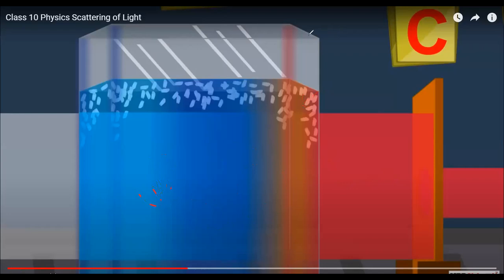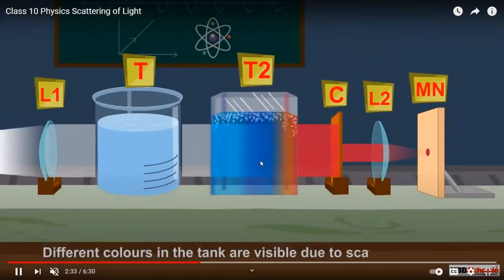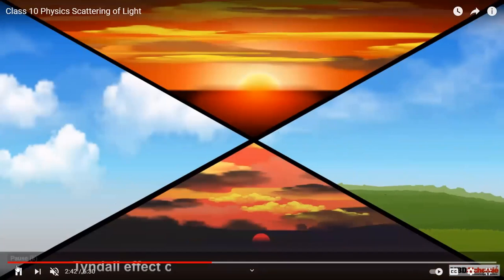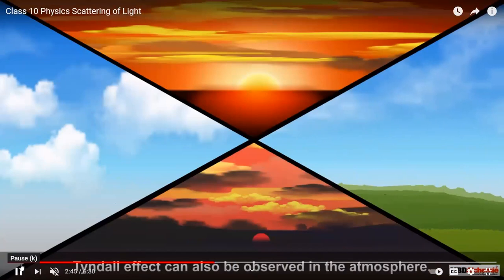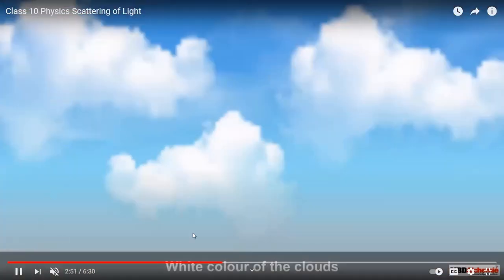You can see the red spot — red light is clearly visible on screen MN. Different colors in the tank are visible due to scattering of light by colloidal sulfur particles. This is called Tyndall effect. The Tyndall effect is also the reason for the different colors of the sky, clouds, and the reddening of the sun during sunrise and sunset, due to the scattering effect of the atmosphere.